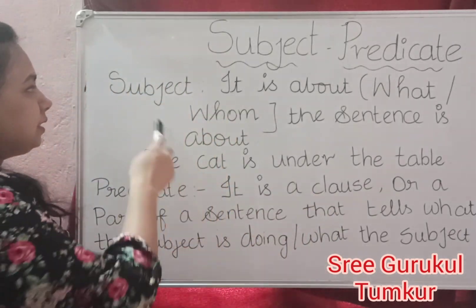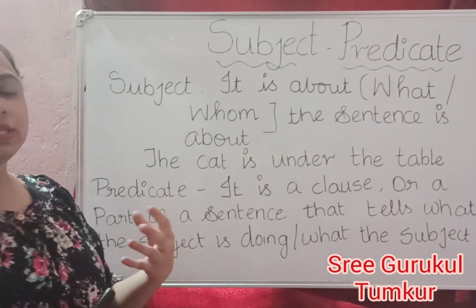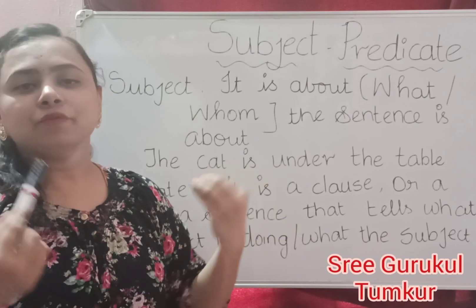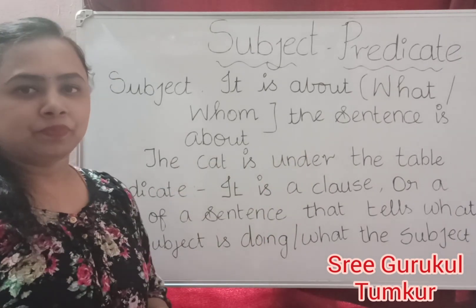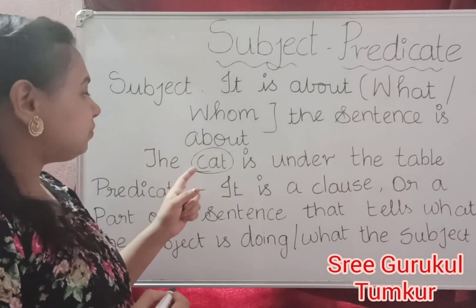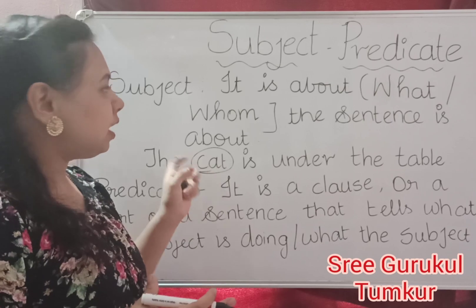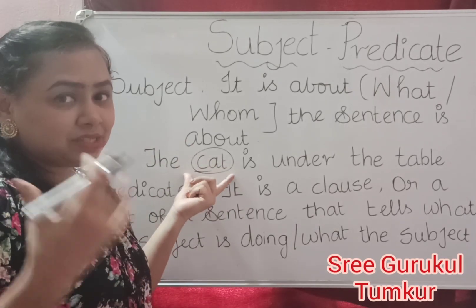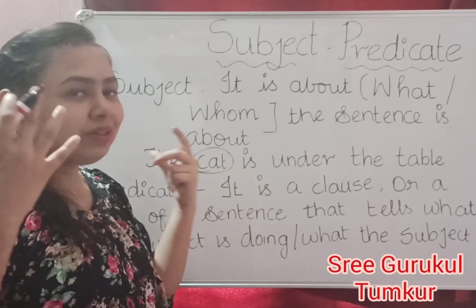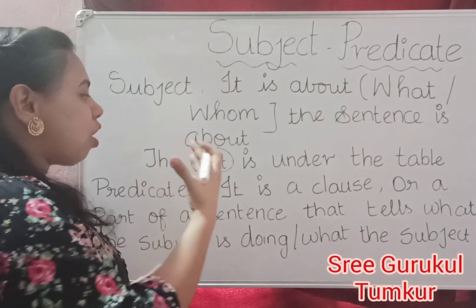First we are seeing about subject. Subject means it is about what or about whom the sentence is talking about — about a person, what they are doing, about whom we are speaking. For example: 'The cat is under the table.' In this sentence, 'the cat' is the subject because we are talking about a living being, a cat. We are going to say about the cat — what it is doing, whether it is sleeping or running or climbing. So if we are talking about a person or a thing, then it is called a subject.